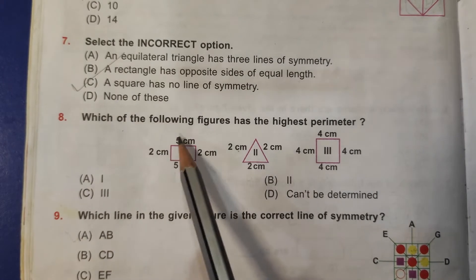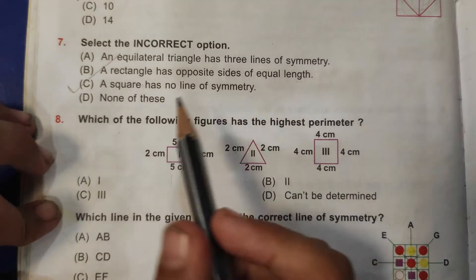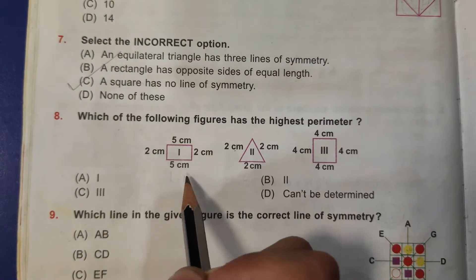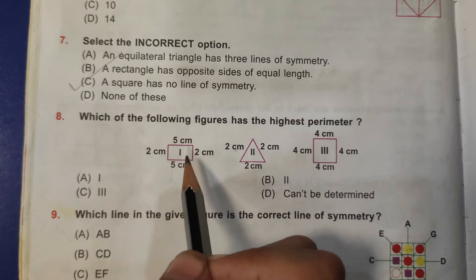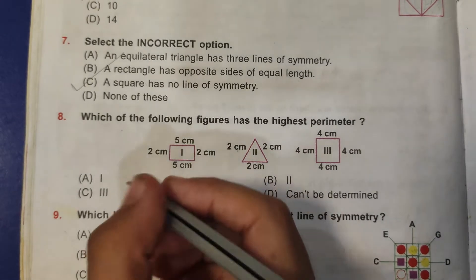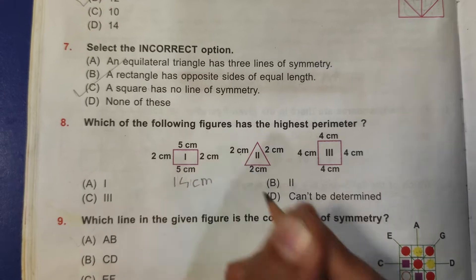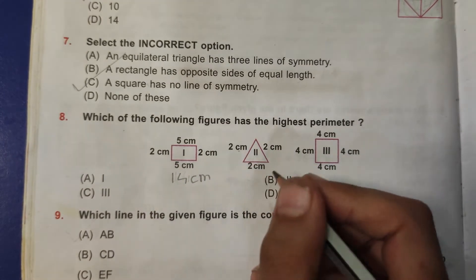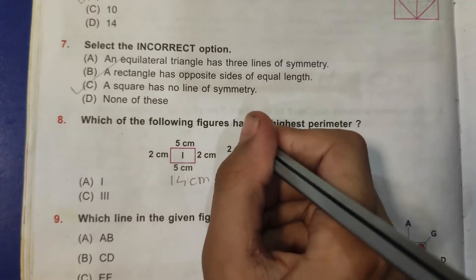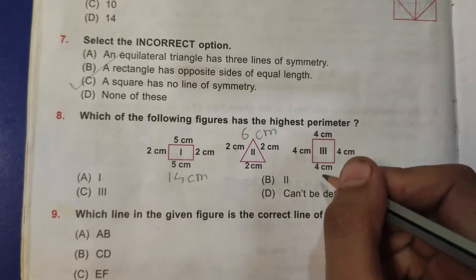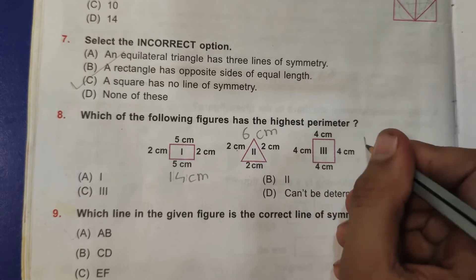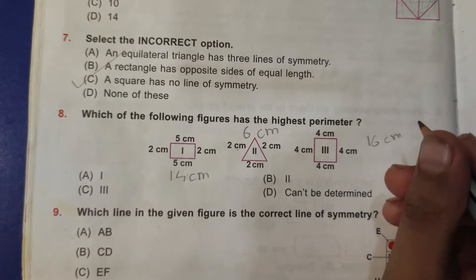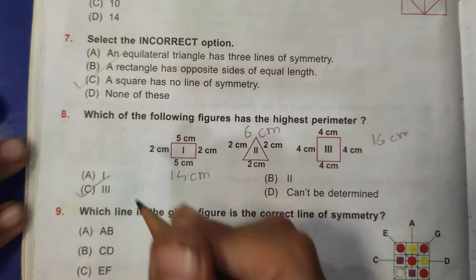Eighth question: which of the following figures has the highest perimeter? So here 5 plus 5, that is 10, and then 2 plus 2 is 4. So 10 plus 4, that is 14. So we will write here 14 centimeters. And then here 2 plus 2 plus 2, that is 6. 6 centimeters and 4 plus 4 plus 6 is 16. So 16 centimeters. So 16 centimeters is the highest among all. So C is the correct answer.